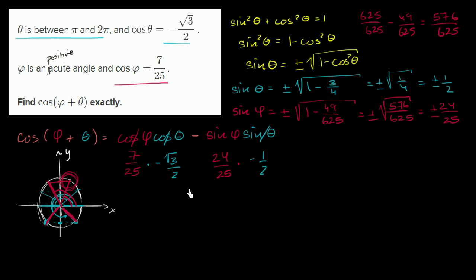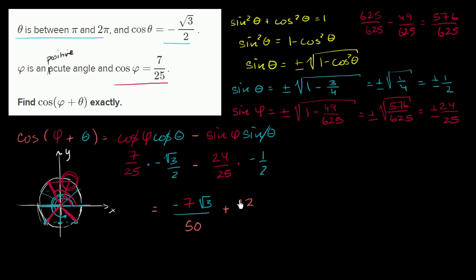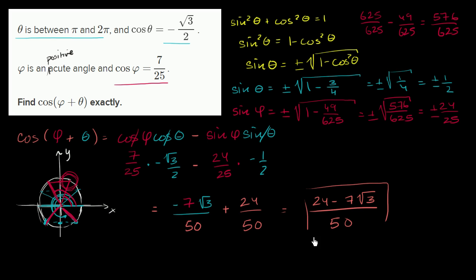Now we multiply and subtract. Cosine phi times cosine theta is (7/25)(−√3/2) = −7√3/50. Sine phi times sine theta is (24/25)(−1/2) = −12/25 = −24/50. Subtracting that negative gives us a positive: −7√3/50 plus 24/50, which equals (24 − 7√3) over 50. And we are done.